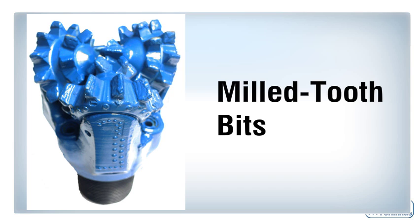Teeth of the bits are different depending on formations. For soft formations, the teeth should be long, slender, and widely spaced — these teeth will produce freshly broken cuttings. For hard formations, the teeth should be short and closely spaced — these teeth will produce smaller, more rounded, crushed, and ground cuttings.